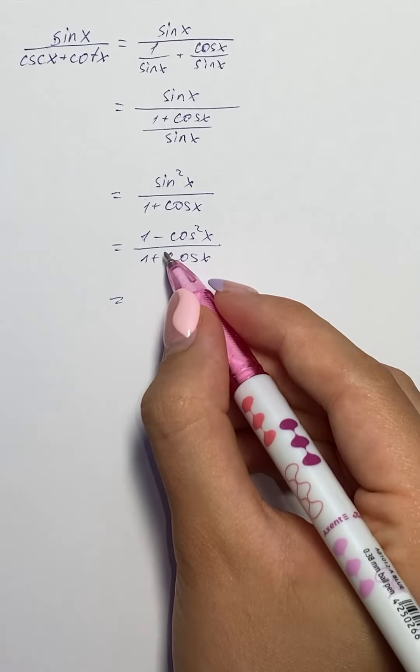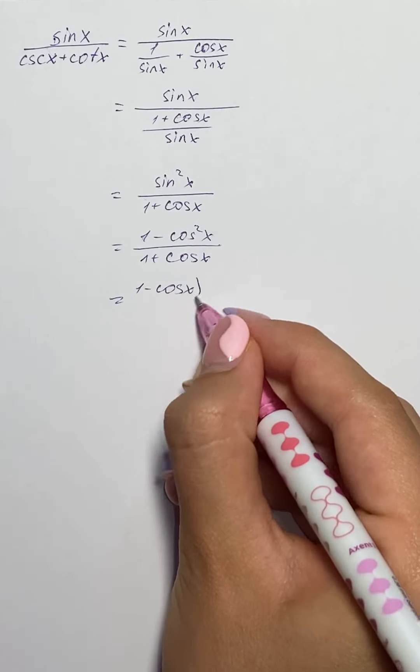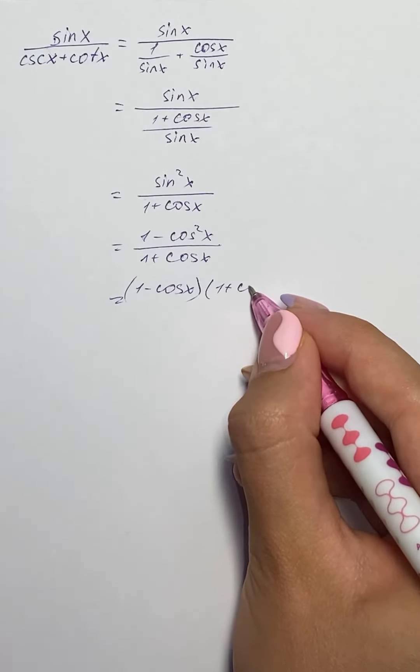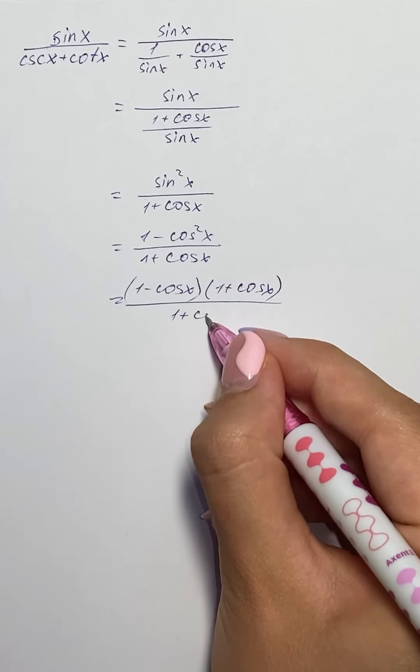And we apply the difference of squares formula here, so we have 1 minus cosine of x times 1 plus cosine of x over 1 plus cosine of x.